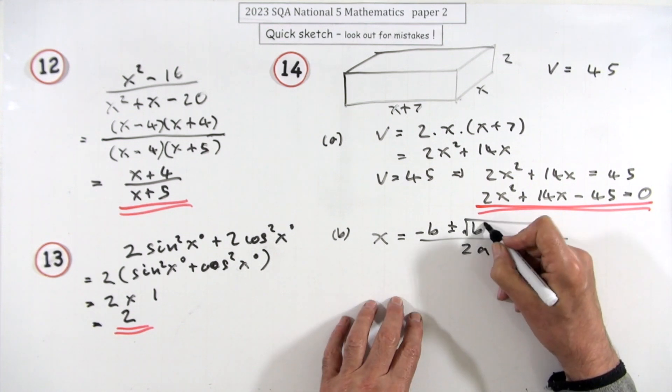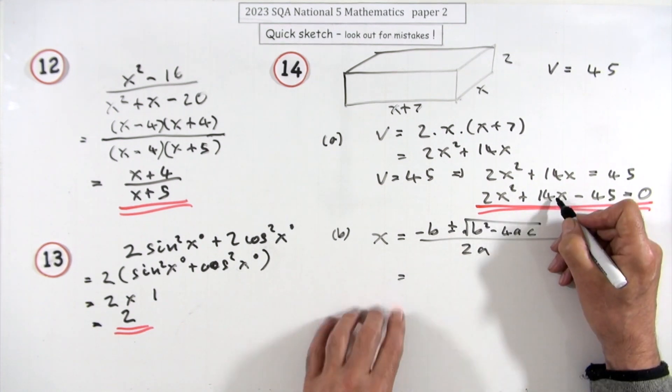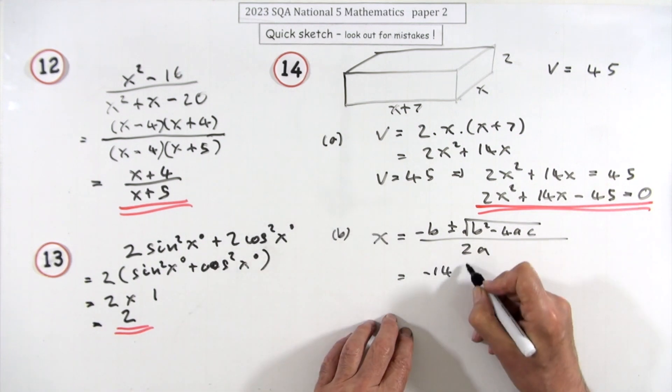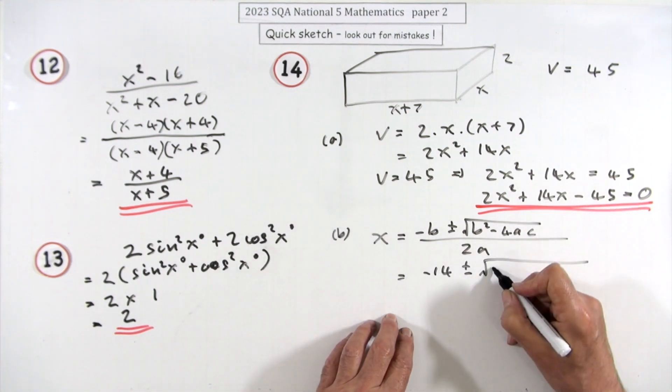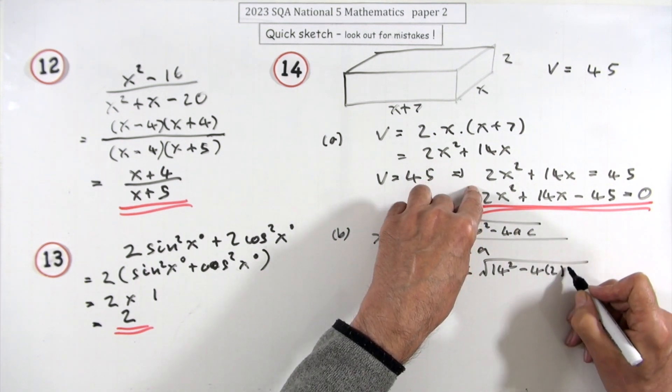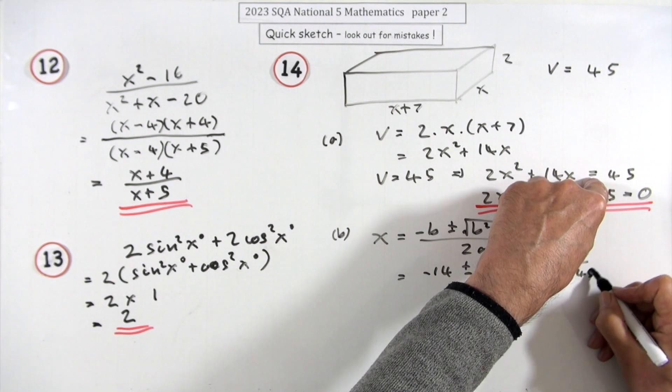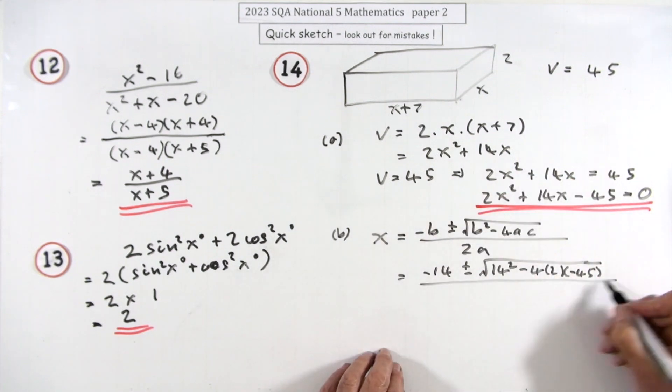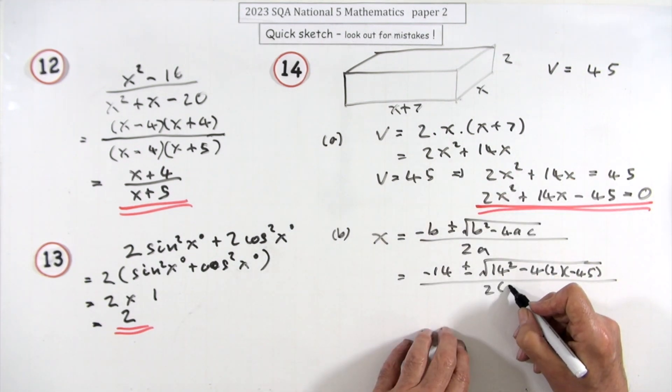We're solving that equation, so we'll just put it down here. This is what x should be: negative b all over 2a plus or minus the square root of b squared minus 4ac. Just pop all that in. Negative of b, negative 14, plus or minus b again, the 14 squared, 4 times a, and that's a negative 45 for c, all over 2 times a, which is the 2.